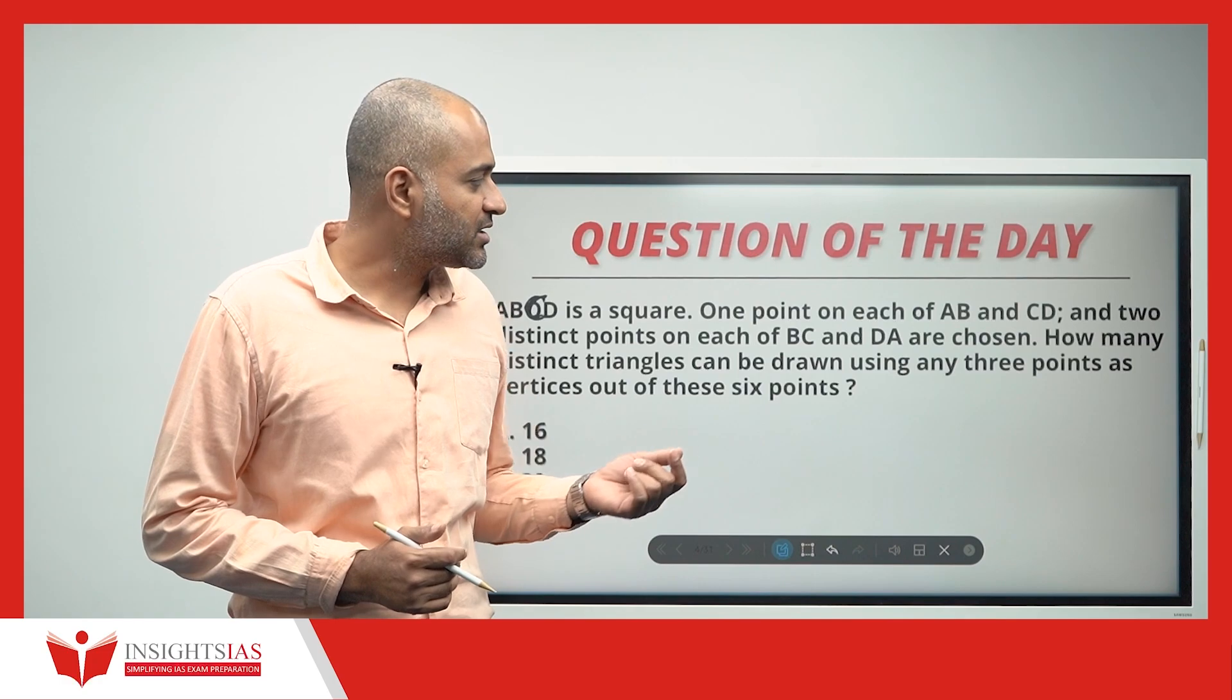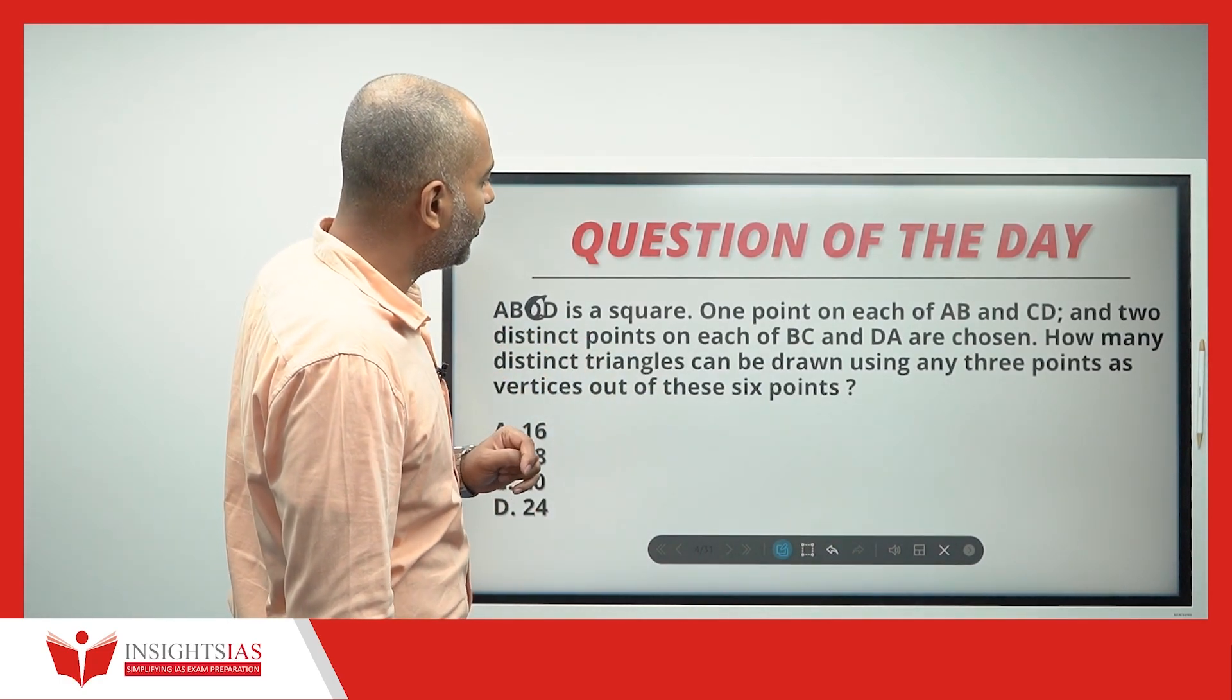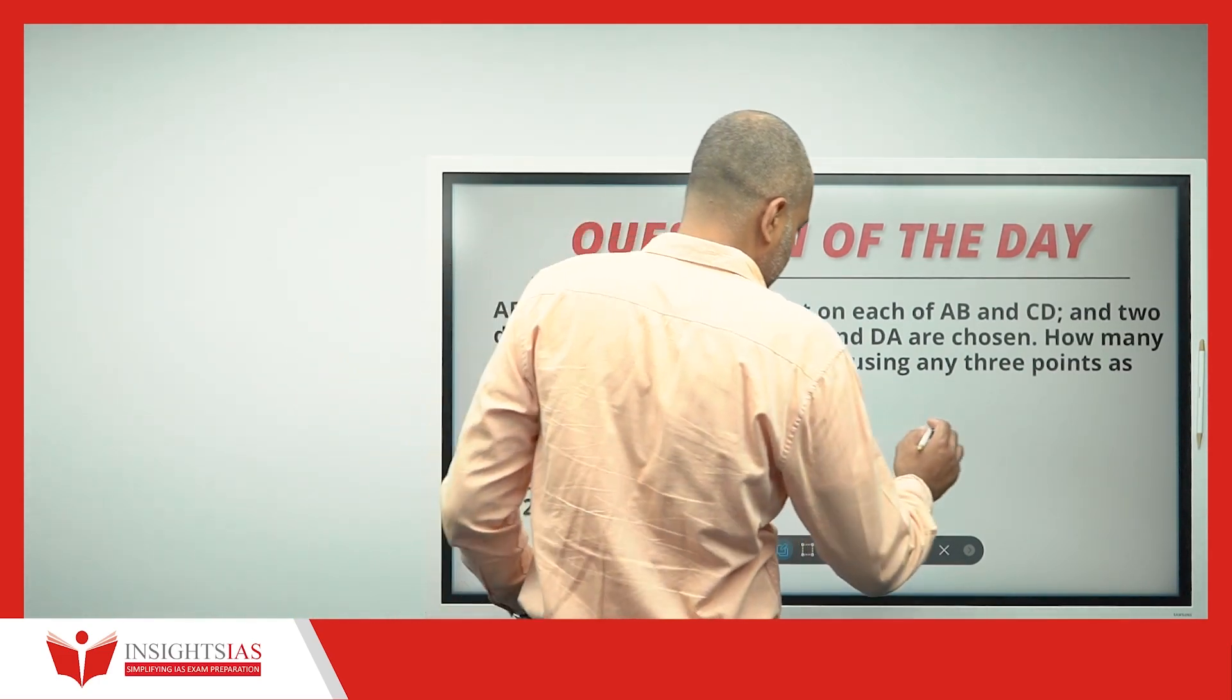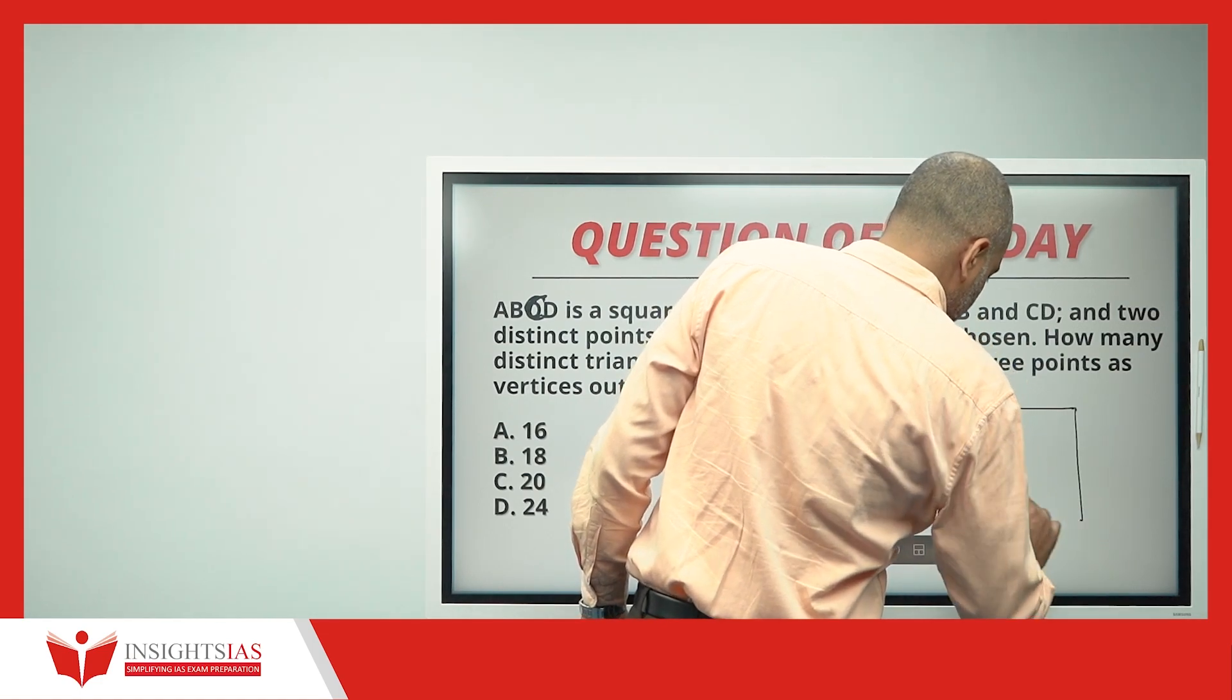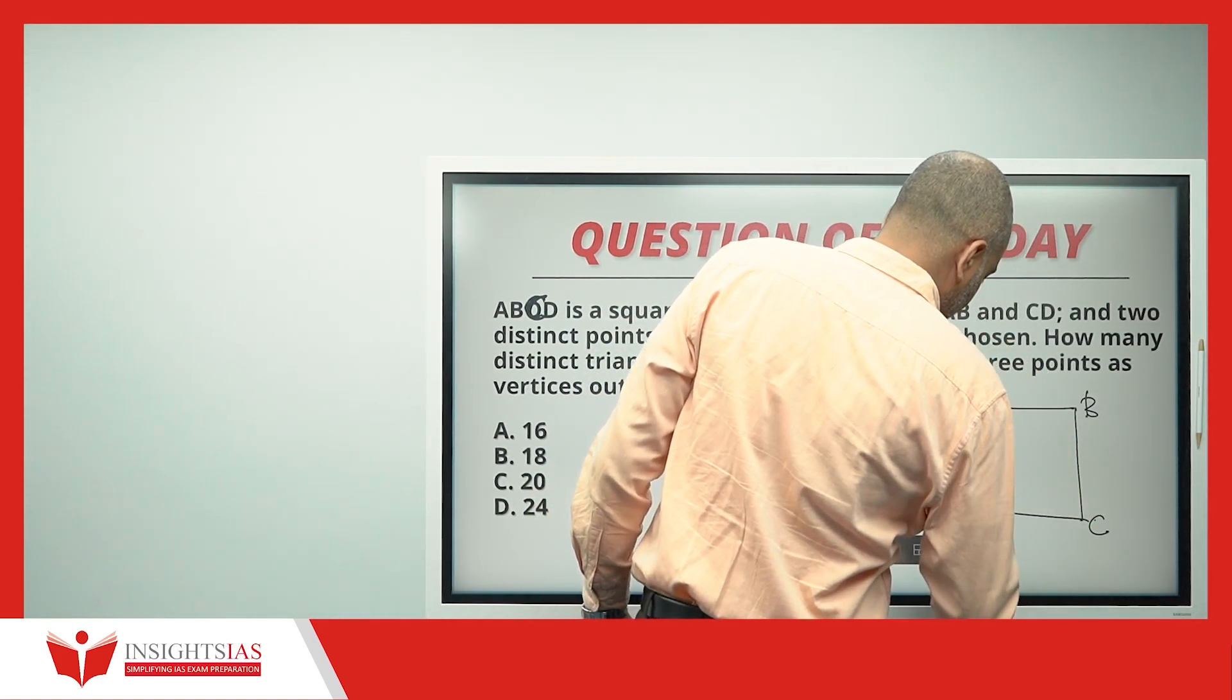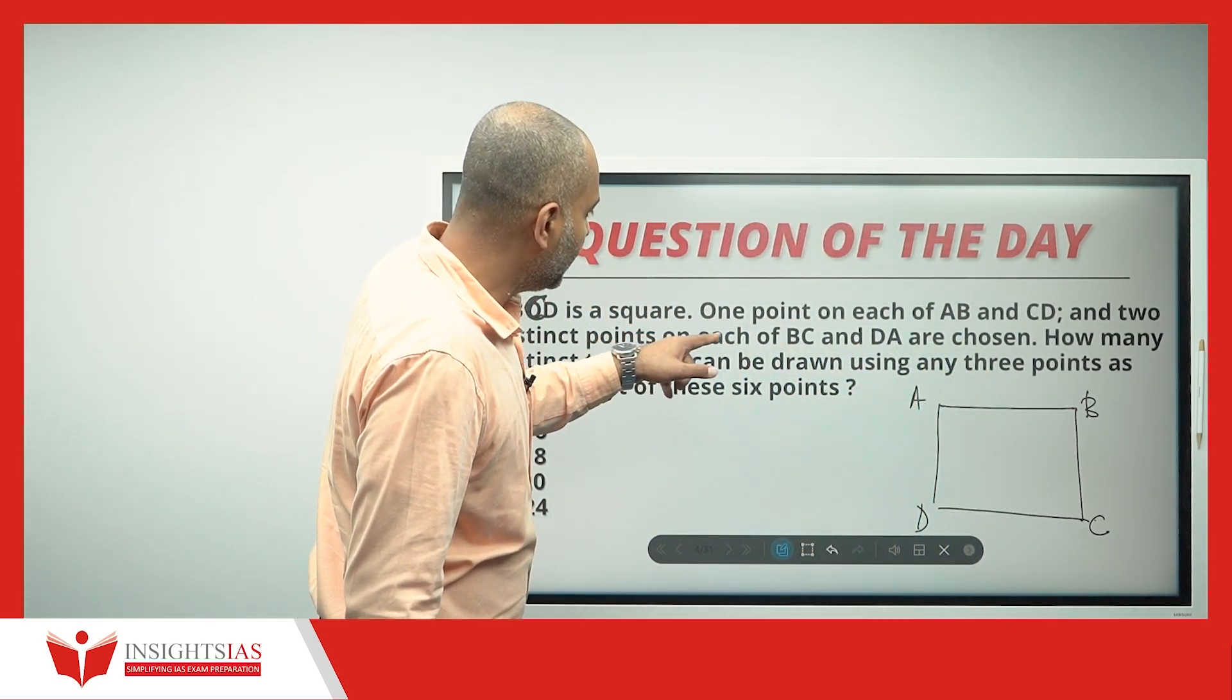This is the question of the day. This was asked in a 2023 paper itself. ABCD is a square, one point each of AB and CD. Let us draw a square here now. Let us name the coordinates A, B, C and D. These are the vertices.